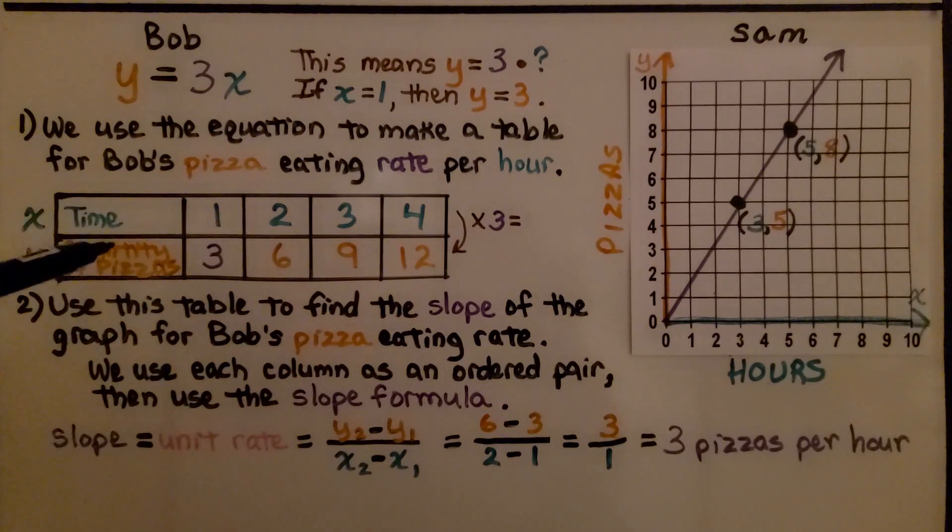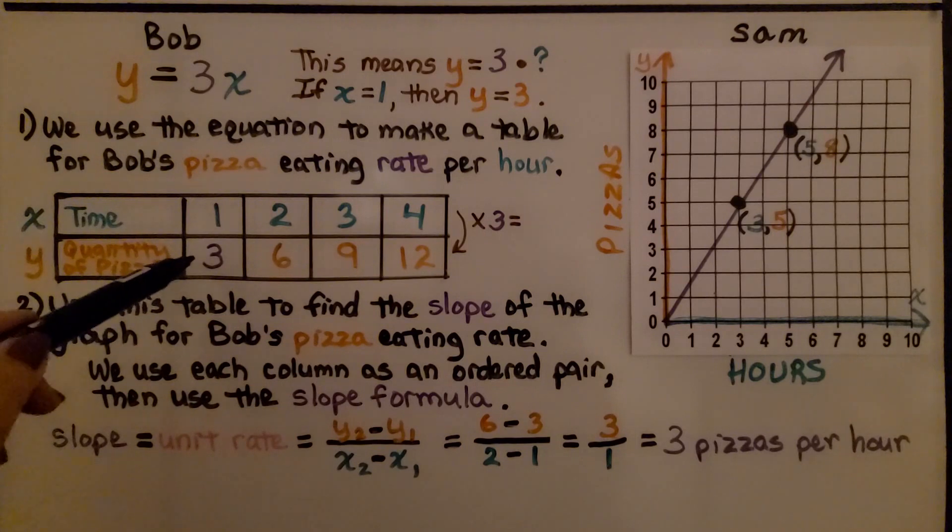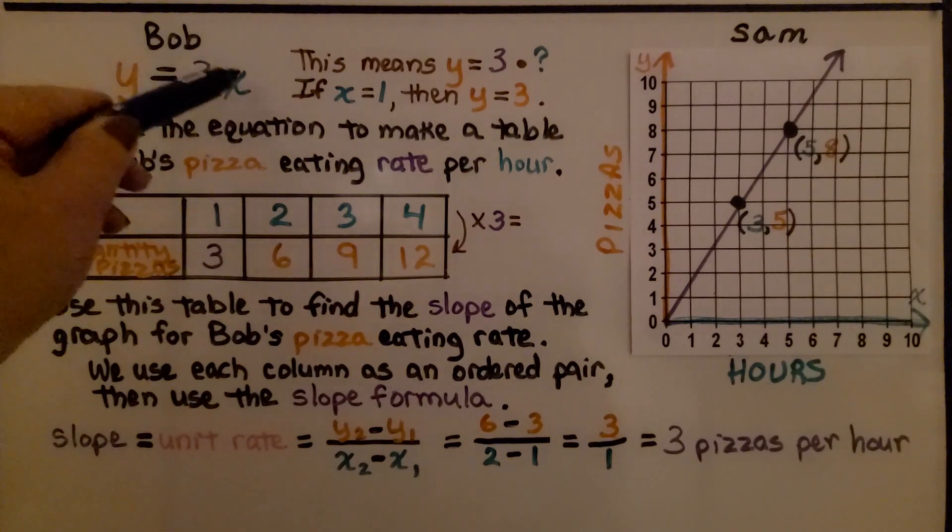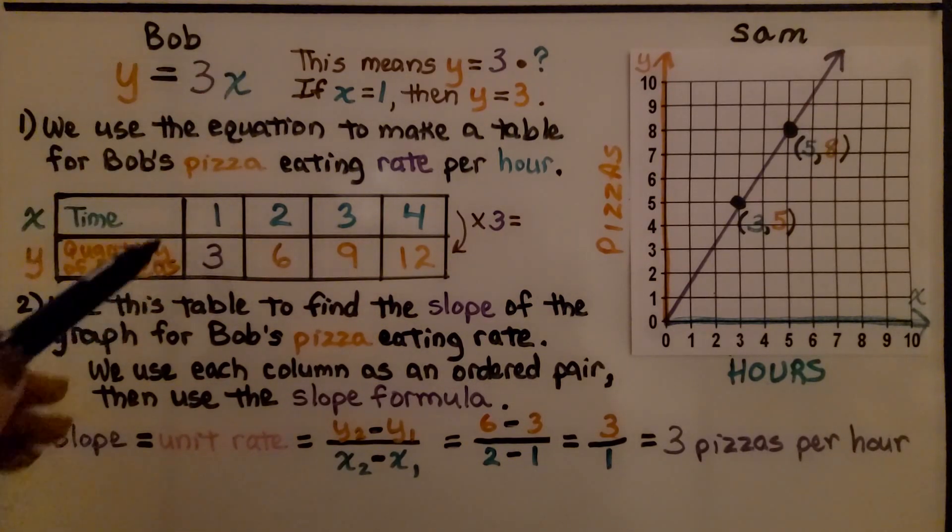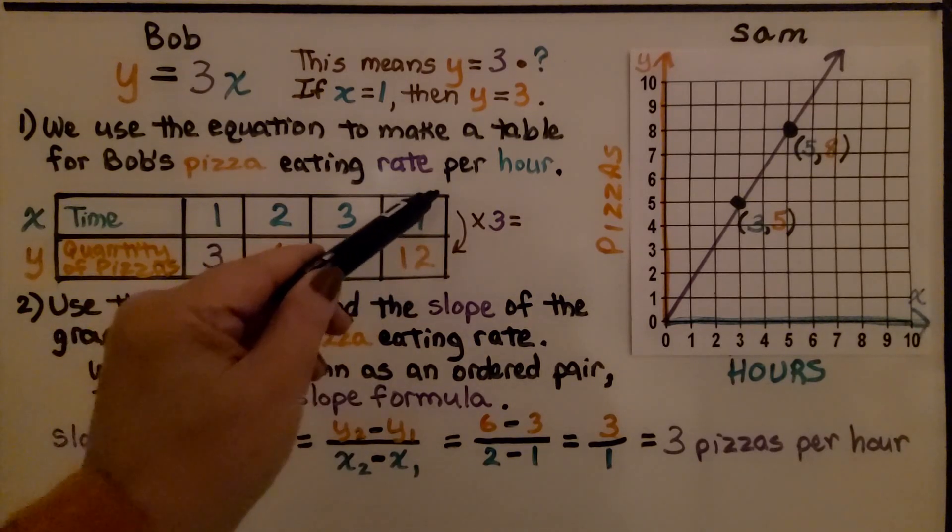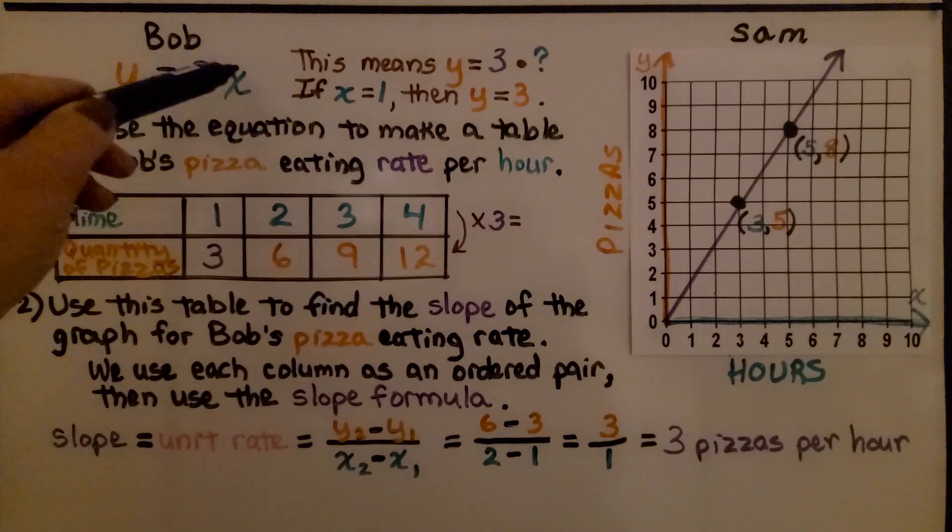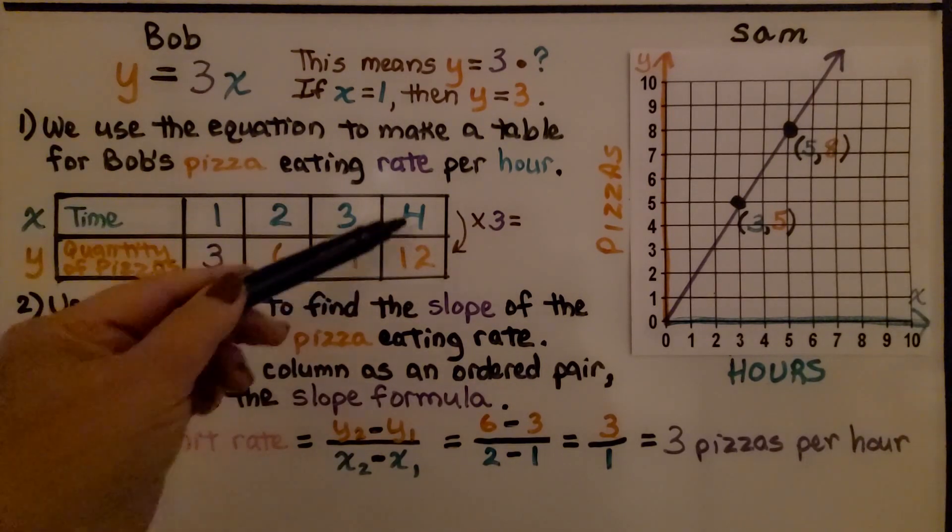We use the equation to make a table for Bob's pizza eating rate per hour. We have our time as our x value and the quantity of pizzas as our y value. If he has 1 hour, he's going to eat 3 pizzas. That means 2 hours would be 6 pizzas because we're multiplying the x value times 3. So 3 hours is 9 pizzas, 4 hours is 12 pizzas.